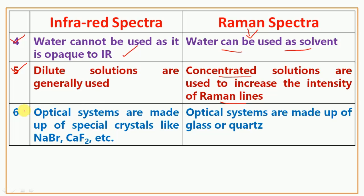The sixth and last point: in IR Spectra, optical systems are made up of special crystals like sodium bromide, calcium fluoride, etc. In Raman Spectra, optical systems are made up of glass or quartz.